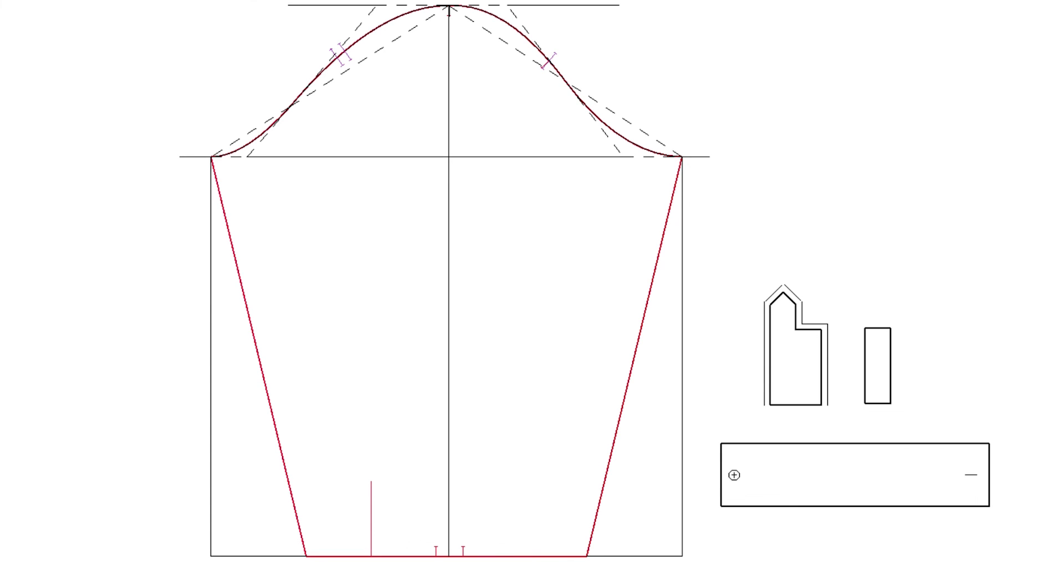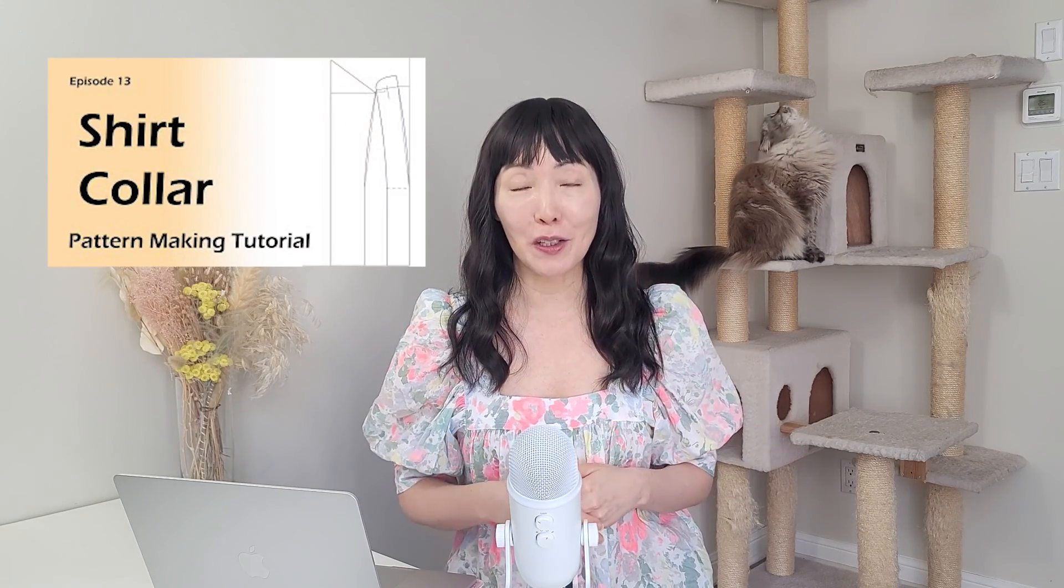Sleeve pattern is done. There you have it. We drafted front and back body in the previous video and sleeve patterns today. I'm not going to draft the collar. I already have a video on shirt collar pattern making, episode 13. Watch that video to draft shirt collar patterns.